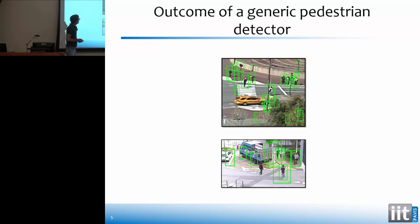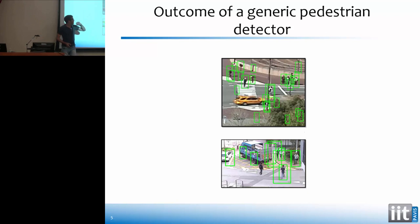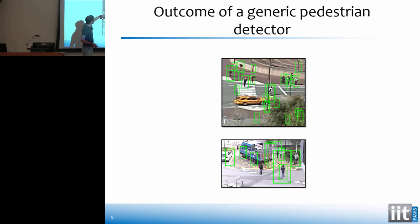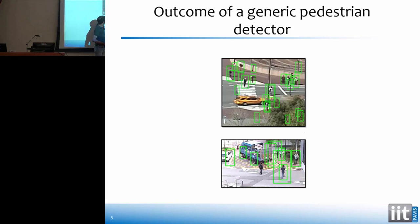Here's an example of what you have if you use a generic pedestrian detector — a state-of-the-art standard generic pedestrian detector — on a typical video surveillance scenario. This image is taken from the MIT traffic dataset, and this is the Chuck Square dataset. In both cases, you have videos taken from a camera in a far field, so the resolution is very low. There are vehicles, obstacles, occlusions. The viewpoint is very different from the usual viewpoint used in common training datasets such as INRIA and so on.